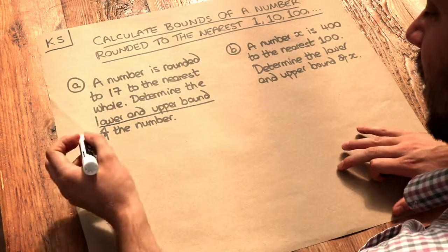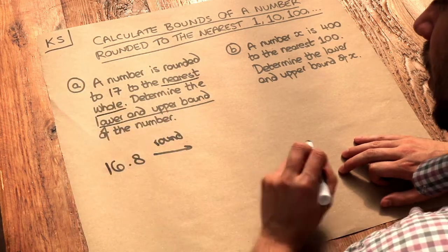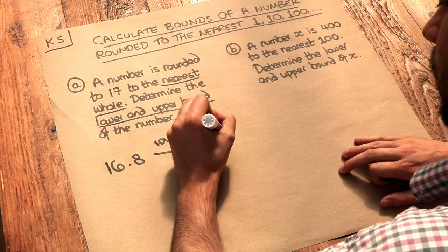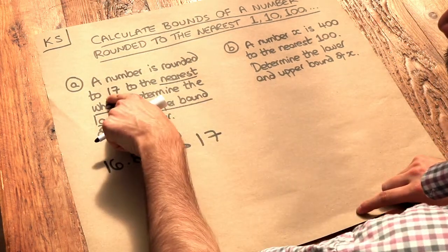For example, let's just take 16.8. If we rounded that to the nearest whole, then that would round to 17, wouldn't it? So the original number could have been 16.8 before it was rounded to 17.